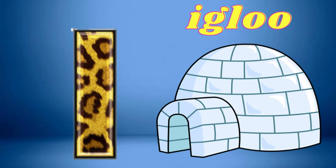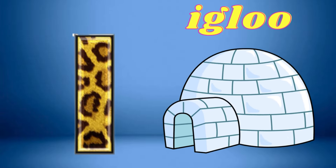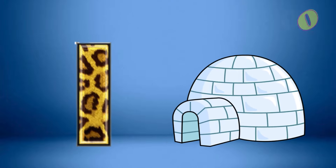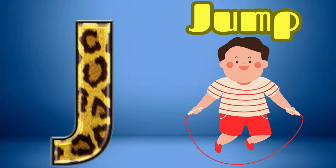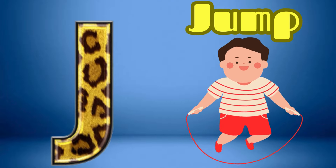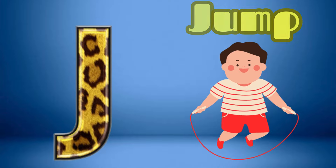I is for Igloo, I-I-Igloo. J is for Jump, J-J-Jump.